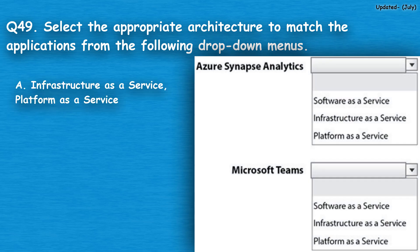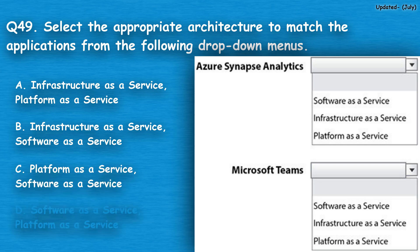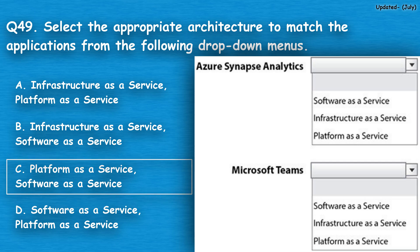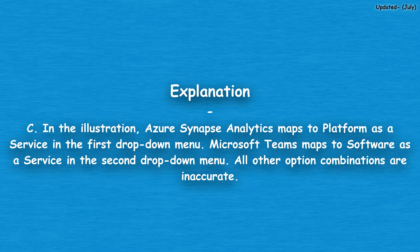Question number 49: Select the appropriate architecture to match the applications from the following drop-down menus. Option A: IaaS / PaaS, option B: IaaS / SaaS, option C: PaaS / SaaS, option D: SaaS / PaaS. The correct answer is option C, platform as a service and software as a service. In the illustration, Azure Synapse Analytics maps to platform as a service, and Microsoft Teams maps to software as a service. All other option combinations are inaccurate.